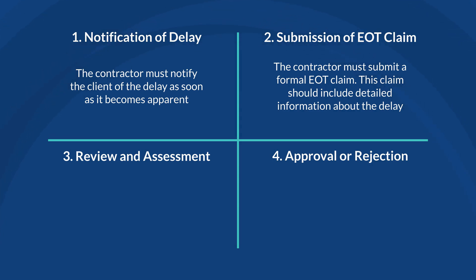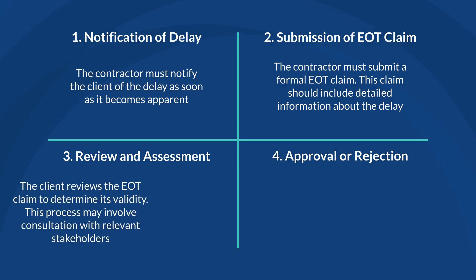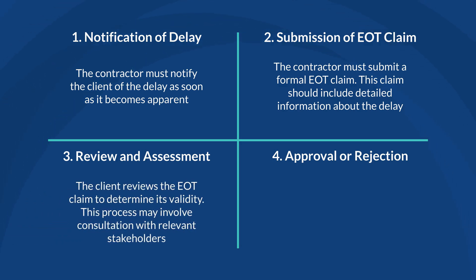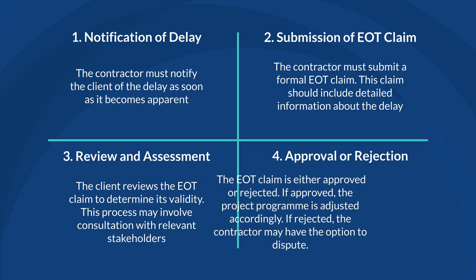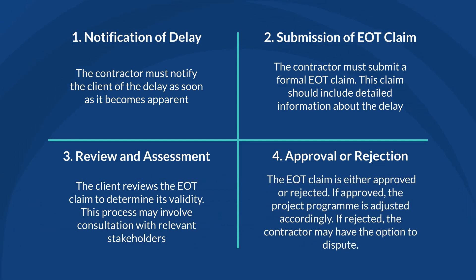Number 3: Review and Assessment. The client or project manager reviews the EOT claim to determine its validity. This process may involve consultation with relevant stakeholders, review of project records, and sometimes an independent assessment. Number 4: Approval or Rejection. Based on the review, the EOT claim is either approved or rejected. If approved, the project program is adjusted accordingly. If rejected, the contractor may have the option to dispute the decision depending on the contract terms.